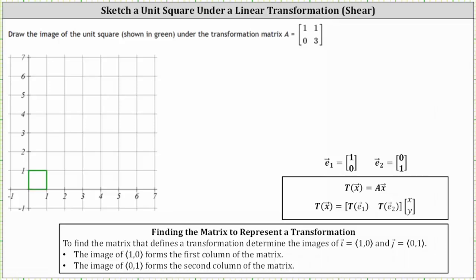We're asked to draw the image of the unit square shown in green under the transformation matrix A. There are two ways we can do this. To find the transformation of a vector, which we can also think of as a point, we find the product of the transformation matrix and the vector or the point as a two-by-one column matrix.